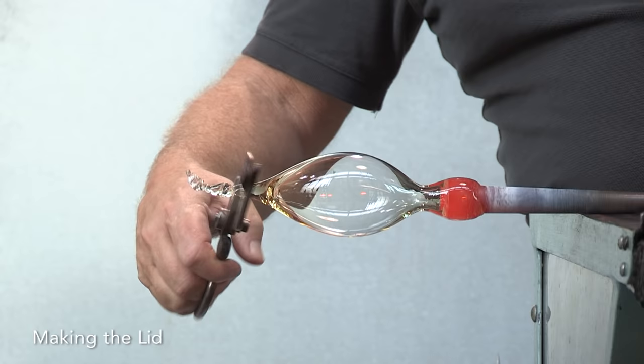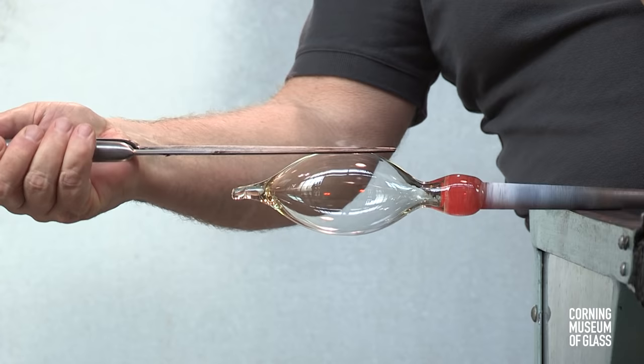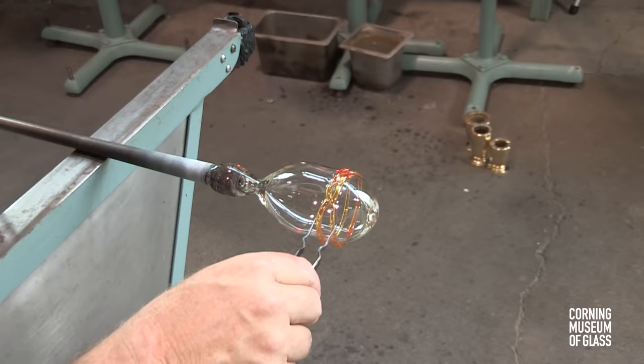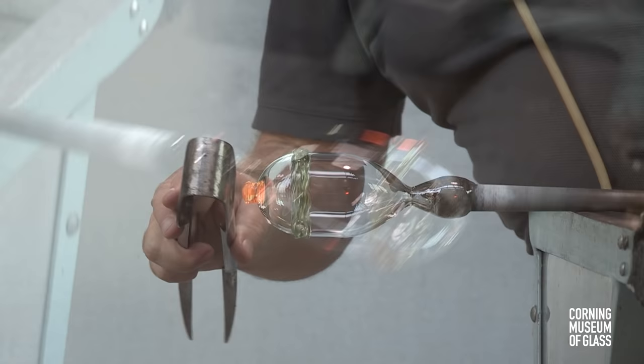The lid begins with a bubble of glass. The neck is formed, the tip trimmed. The chain is made as we saw before.